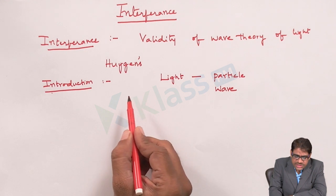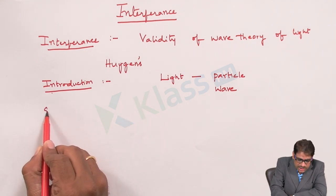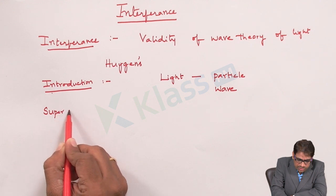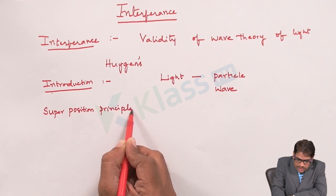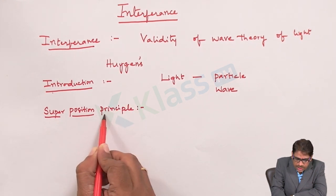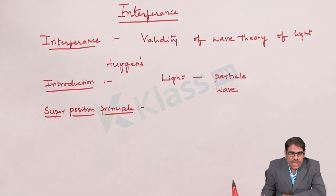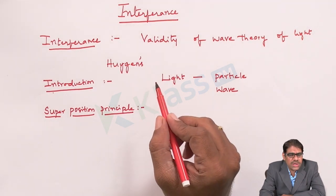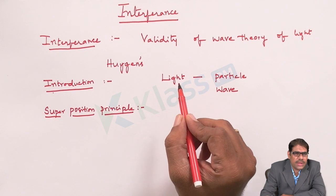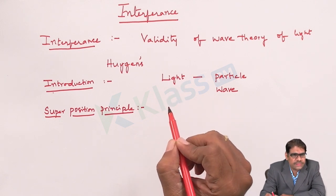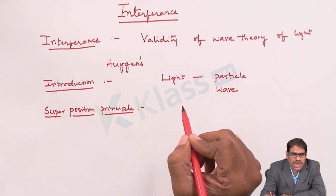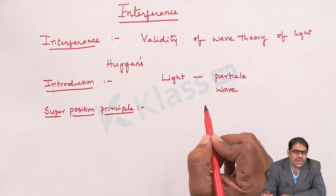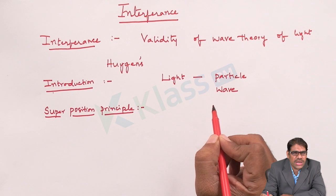The basis for interference of light is the superposition principle. The superposition principle states that when two or more waves superimpose with respect to one another in a particular medium, the resultant displacement at any point in that medium is equal to the algebraic sum of the displacements of the individual waves.